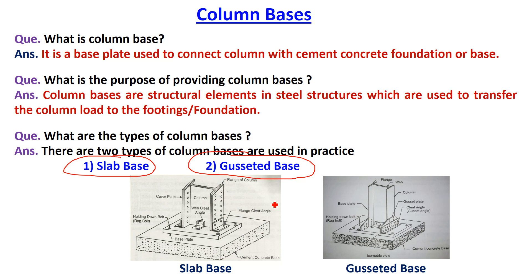Now what is the difference between slab base and gusseted base? We will discuss in detail in the next slide, but briefly: in a slab base, if you look at this first figure, this is an I-section column which is connected to a steel base plate with the help of bolted connections using cleat angles. With the help of these cleat angles, the steel column is connected to the base plate using bolted connections. One cleat angle is provided to connect the flange of the I-section.